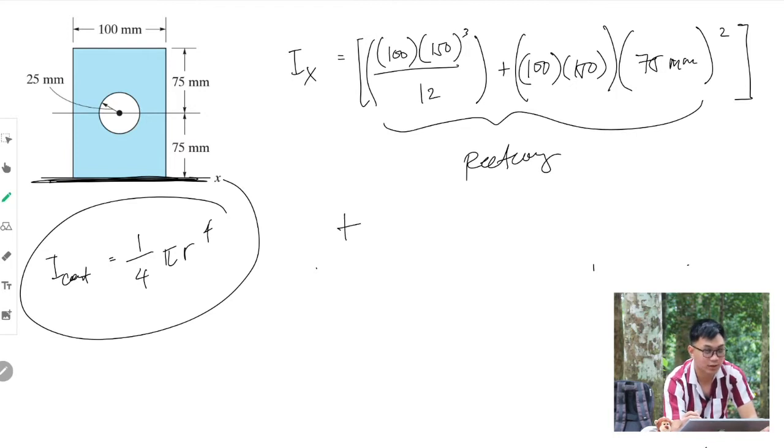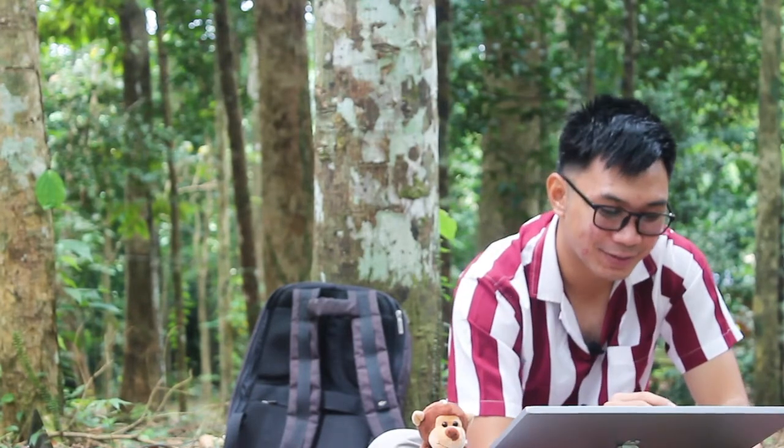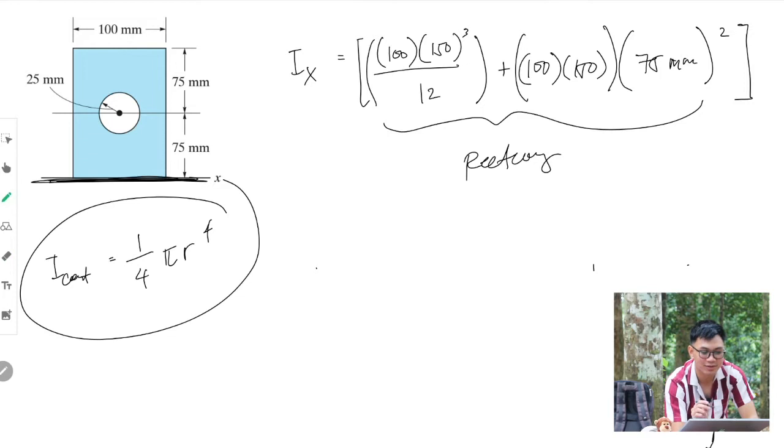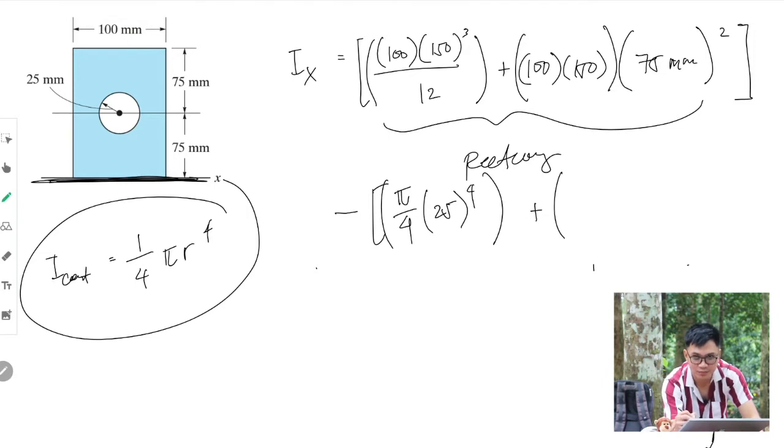Now for the circle, since this circle is hollow, we remove it from the area, so it's minus. Using parallel axis theorem, the moment of inertia of the circle about the centroid axis is pi over 4 r to the 4. So pi over 4 times radius 25 to the 4, plus area pi times 25 squared, multiplied by the distance squared, that is still 75 squared.